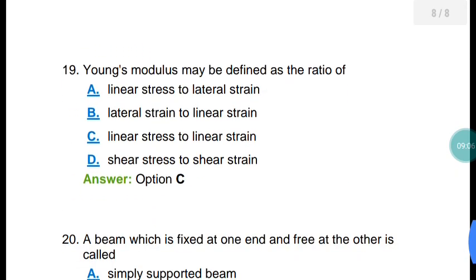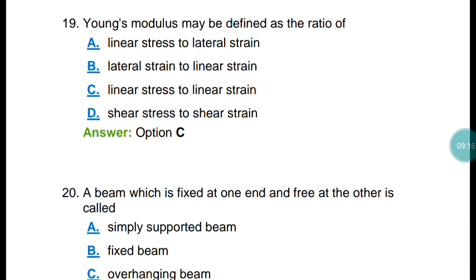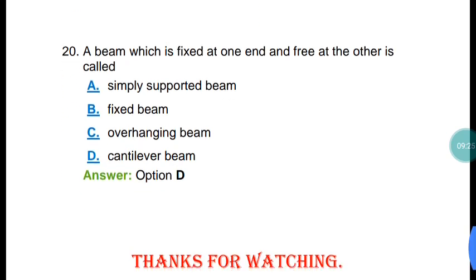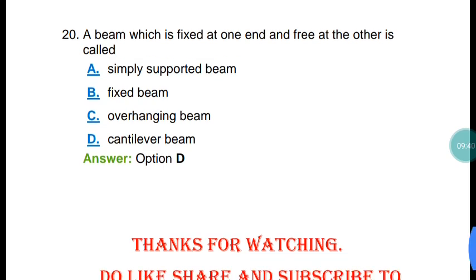Question number nineteen: Young's modulus may be defined as the ratio of linear stress to linear strain. The Poisson's ratio is the ratio of lateral strain to linear strain. Question number twenty: A beam which is fixed at one end and free at the other end is called a cantilever beam.